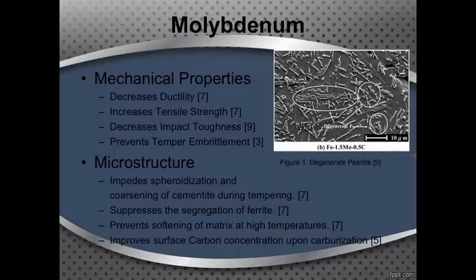The image in this slide illustrates how molybdenum affects the impact toughness of a material. This was done in a powdered metal, and as you can see, it's causing a coarse degenerate pearlite to form. This pearlite forms at the expense of ferrite, and as you may know, ferrite is a tough material that would help to increase impact toughness.